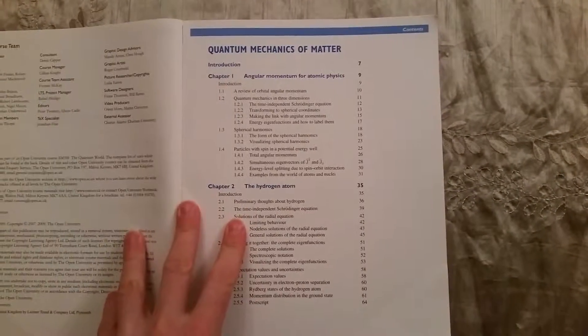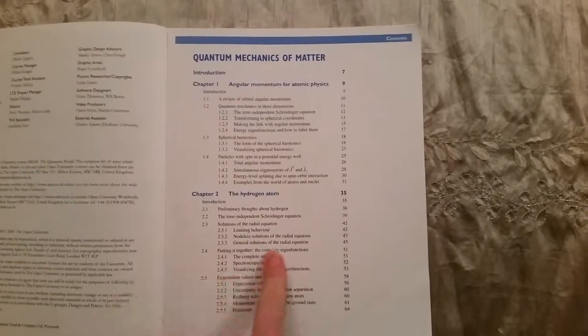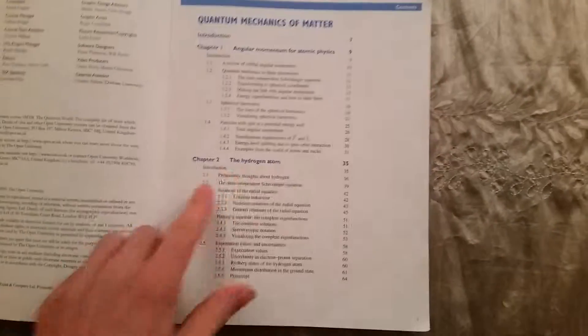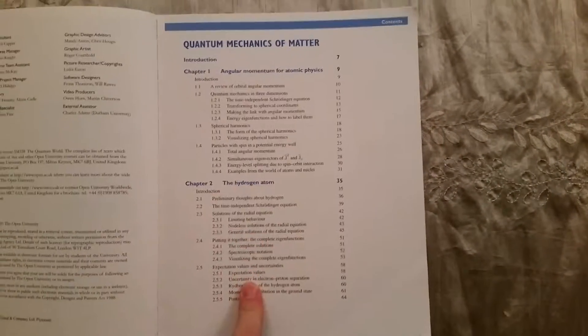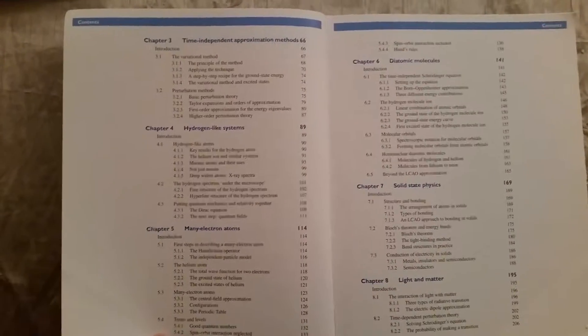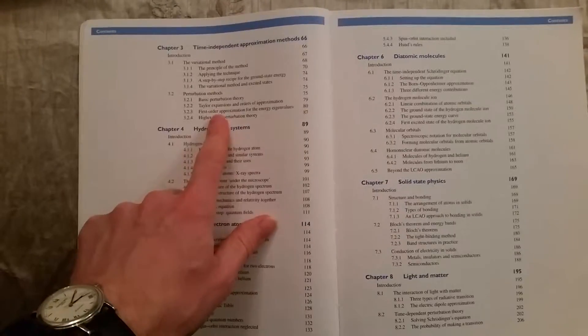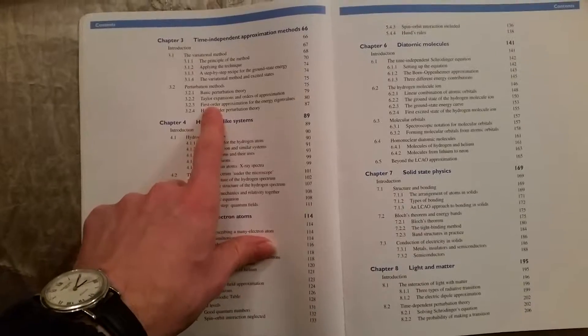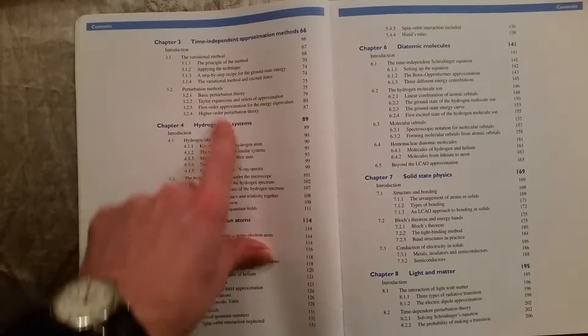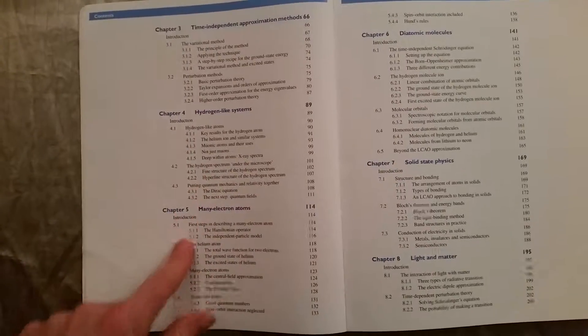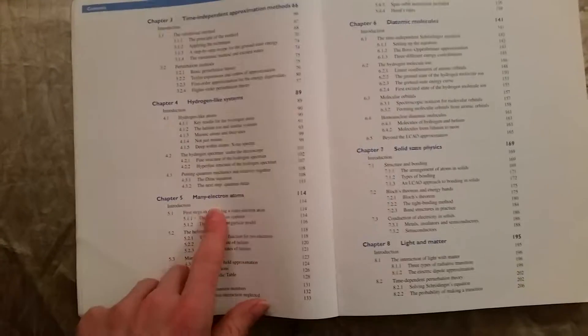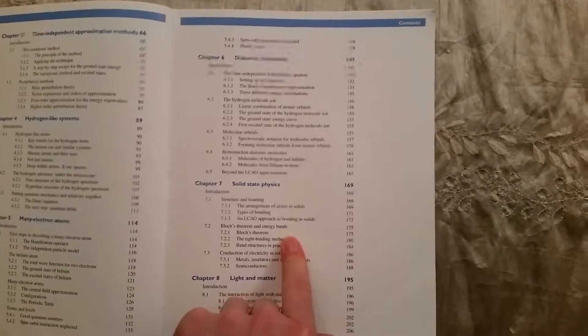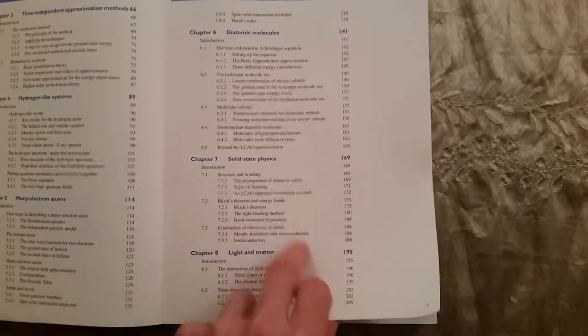This is Book 3. We looked at the hydrogen atom, that was really interesting. Then there are approximation methods, the variational method and perturbation methods. Then you go from hydrogen atom to many electron atoms, diatomic molecules, solid state physics, light and matter. That is it. Have a quick flick through that.